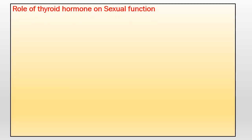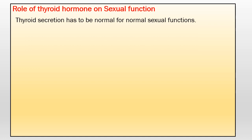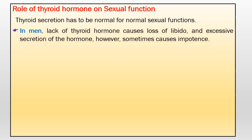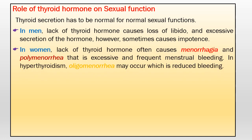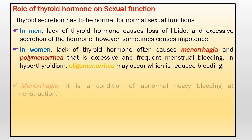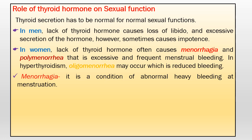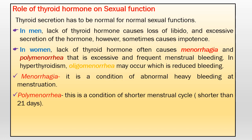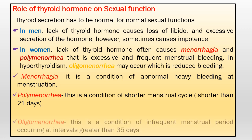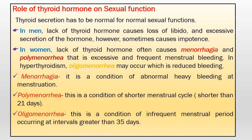Coming to the role of thyroid hormone in sexual functions, thyroid secretion has to be normal for normal sexual function. In men, lack of thyroid hormone causes loss of libido, and excessive secretion of the hormone sometimes causes impotency. In women, lack of thyroid hormone often causes menorrhagia and polymenorrhea, that is excessive and frequent menstrual bleeding. In hypothyroidism, oligomenorrhea may occur, which is reduced bleeding. Menorrhagia is the condition of abnormal heavy bleeding at menstruation. Polymenorrhea is the condition of a shorter menstrual cycle, like shorter than 21 days. Oligomenorrhea is the condition of infrequent menstrual periods occurring at intervals greater than 35 days.